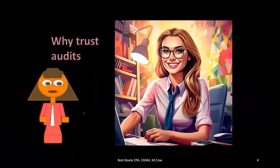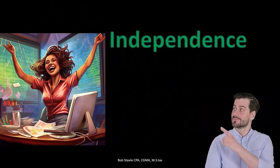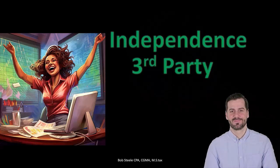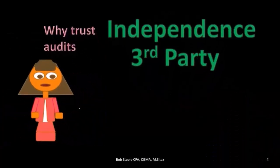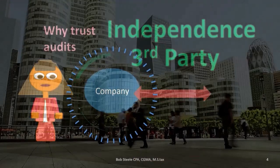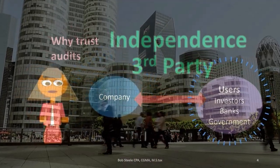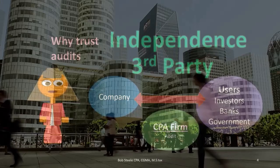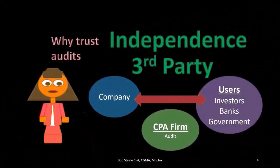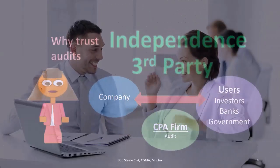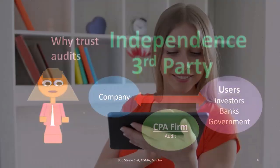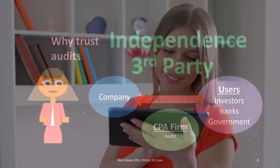Why would we trust the audit? What makes the audit process trustworthy? The key is independence — an independent third party. If a company and end users are doing business, a third party not involved in the immediate transaction brings objectivity. If two people are doing business and a third party is involved — someone who is a friend of both or someone neither knows — that person has no direct relation to the transaction.